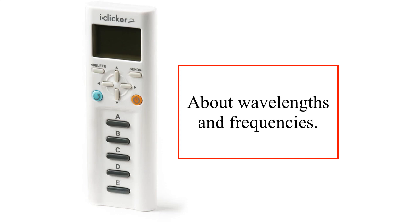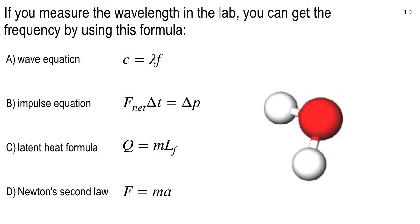Let me ask you a clicker question about wavelengths and frequencies. With clicker questions, if you're here, you're good. If you're not here — it's participation. I'm glad to see a lot of people here. Question number one for today: you measure the wavelength in the lab using the procedure I just mentioned — you measure D, the position of H-alpha, you get lambda. How do you get the frequency? Which formula — A, C, or D? The other section did really well on this.